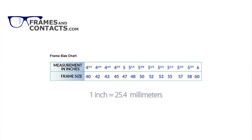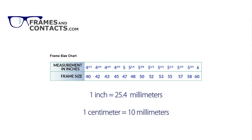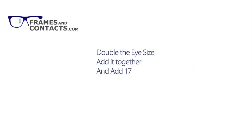One inch equals 25.4 millimeters. To convert from centimeters to millimeters, please multiply by 10. One centimeter equals 10 millimeters. Now that you have your eye size — for example, 5.5 equals 52 millimeters — the next step is determining your overall frame size. Double the eye size, add it together, and add an average bridge measurement of 17. For example: 52 plus 52 plus 17 equals 121. Now add an average of 5 millimeters for each of the end pieces. For example: 121 plus 5 plus 5 equals 131. This is the best fitting frame for you, plus or minus 3 millimeters.